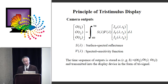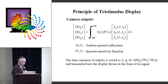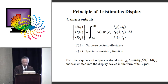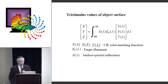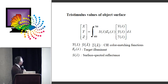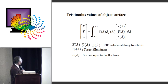This shows the principle of the phosphor display. This slide shows the camera output equations. The camera output for spectral function S(λ) and illuminant IX, IY, IZ are described in this form. The following shows the display output equations. The tristimulus values X, Y, Z are produced from the display input signal RGB.